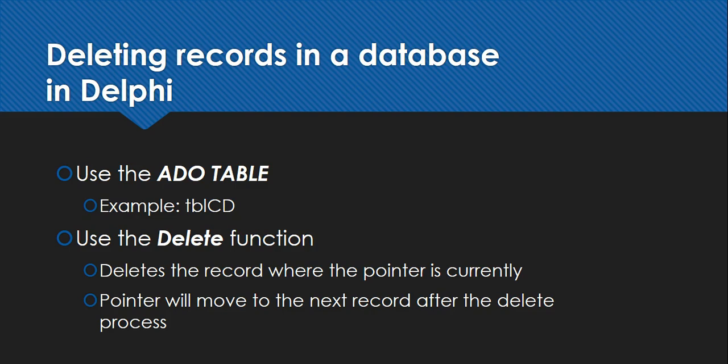We're going to be using a table called TBL_CD, which is the ADO table we are using. It has information about different types of CDs, and if you want to remove a CD from that table you just call delete. The important thing is you need to make sure that the pointer - which we spoke about in the edit video - is at the record you are currently working with. Wherever that pointer is, that is the record that gets deleted.